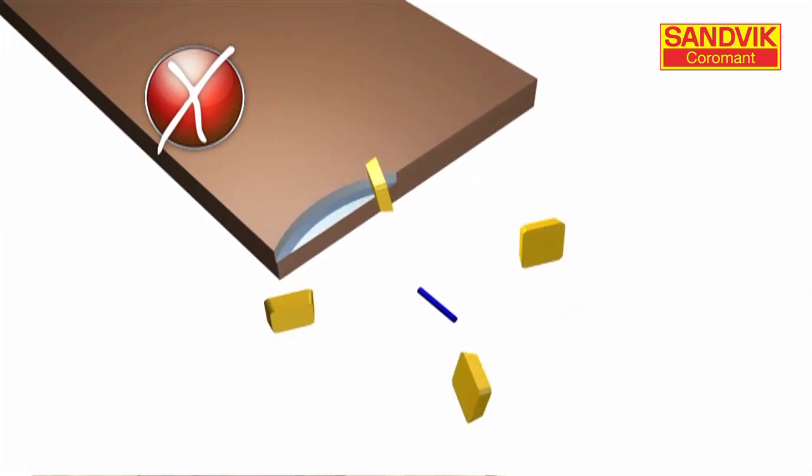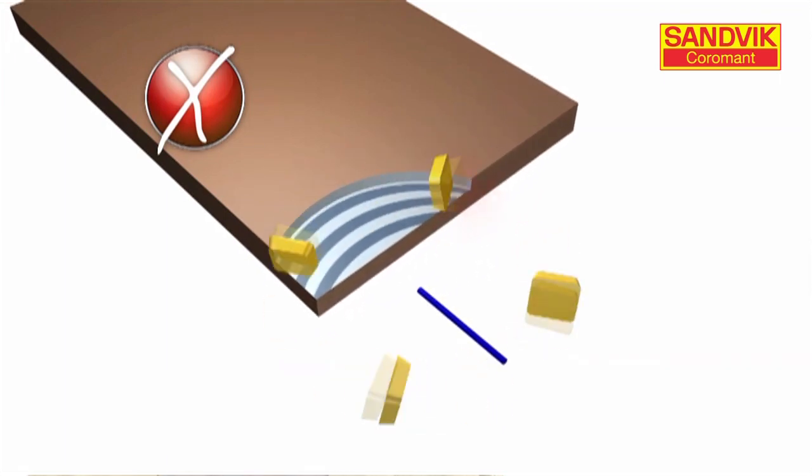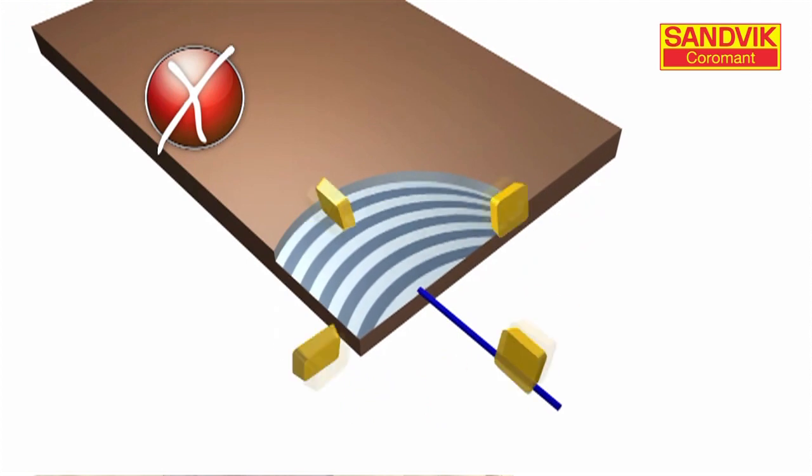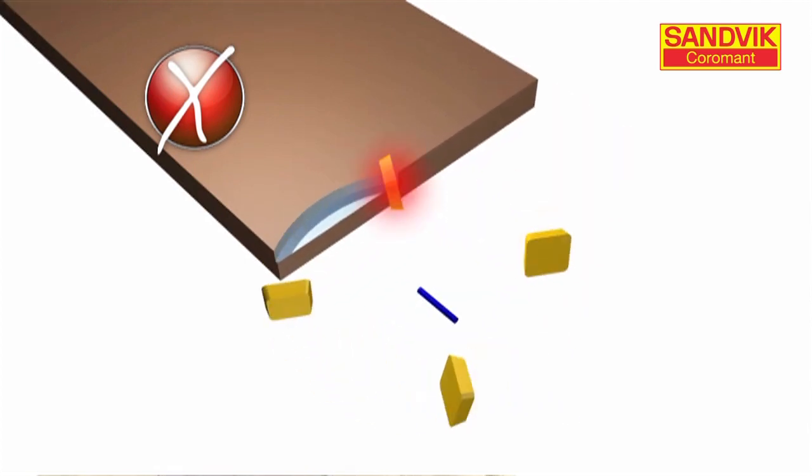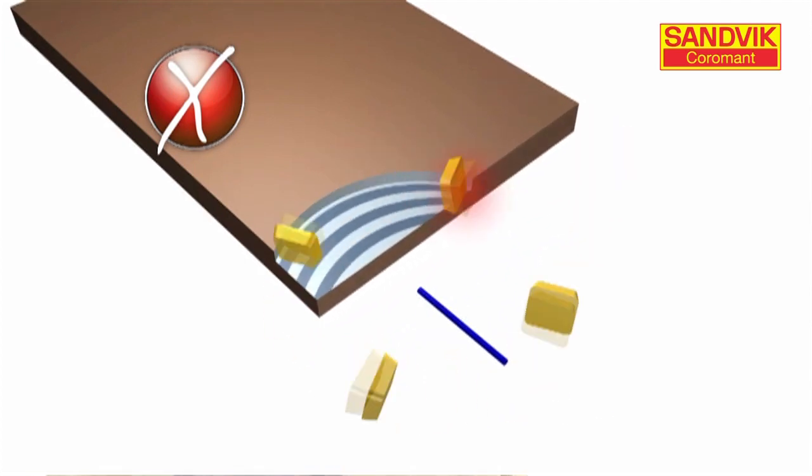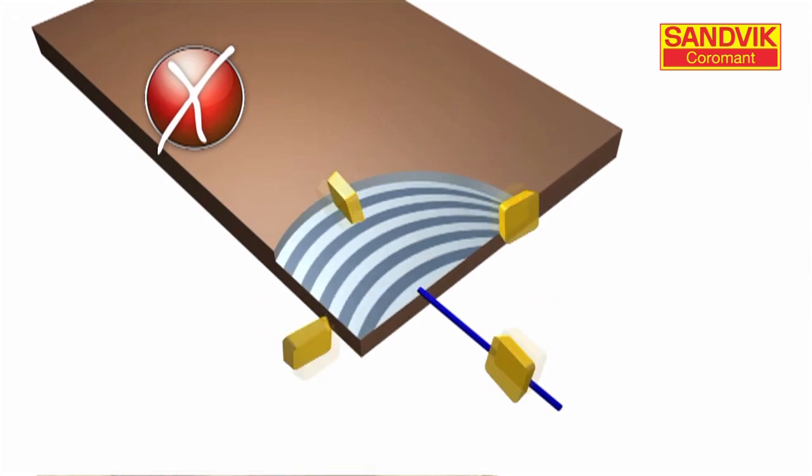This animation shows a typical milling cutter entering into cut. We've removed the body of the cutter for clarity. The areas illustrated with the red explosions are where we have our problem. We're generating a thick chip as we exit the cut.